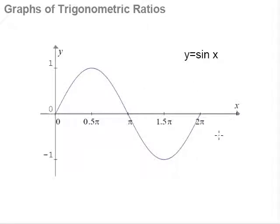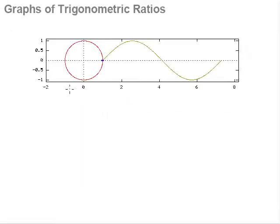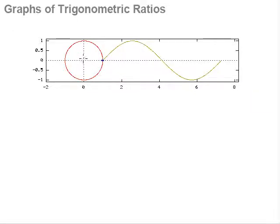Let's take a look and try to understand why the sine curve looks like this. Suppose we draw a unit circle — a circle with a radius of 1. This red circle here has a radius of 1, with center at (0, 0). How does the circle and what we know about sine give us the curve that looks like this?